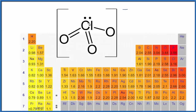Let's take a look at whether ClO3- is polar or nonpolar. This is the chlorate ion. So first, let's look at the polarity of the individual bonds. If we look at the periodic table with the values for electronegativity written in, here's oxygen at 3.44 and chlorine at 3.16.